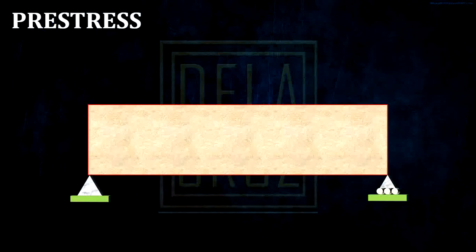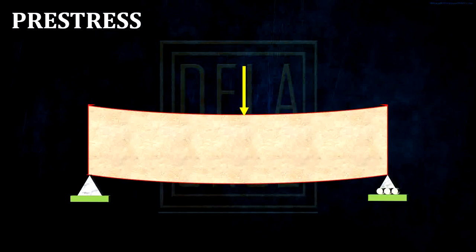Let's consider a simple supported beam. We'll put a load on it and that will deflect in that manner because of that load. Now, one of the design criteria in designing a structure is the serviceability. Serviceability, we are tackling about the deflections and cracks of beams or any structures. In order to minimize the deflection, this is where prestress is done.